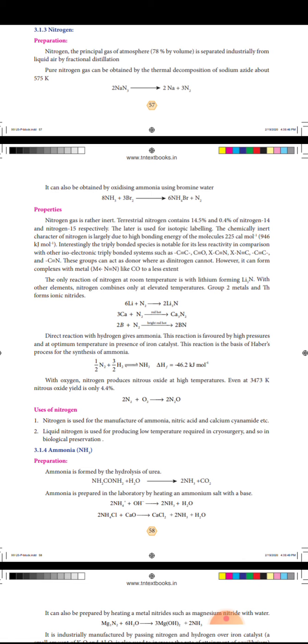2B plus N2 gives 2BN when bright red hot. Direct reaction with hydrogen gives ammonia.